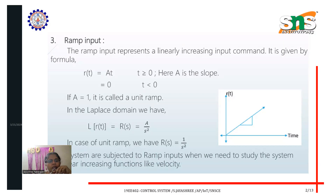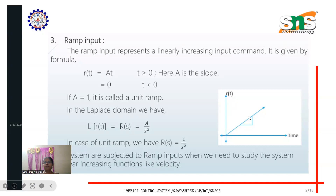Hi everyone, this is Jayashree. We continue with the previous lecture on the different types of input signals for time response analysis. The third type of input is ramp input. The ramp input signal varies linearly with time, and it represents a linearly increasing input command.